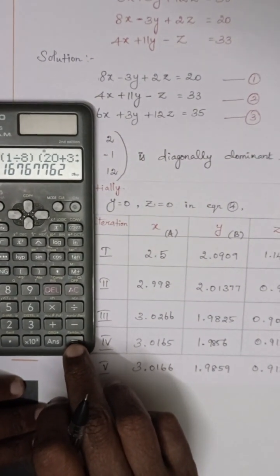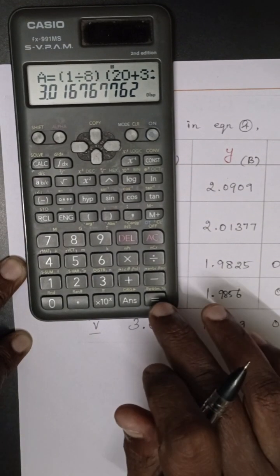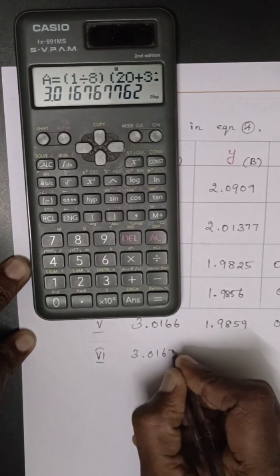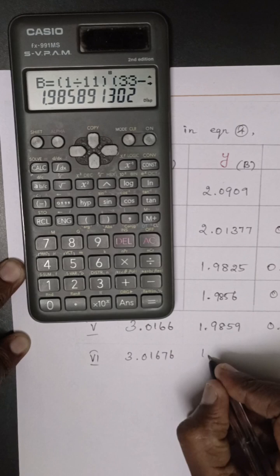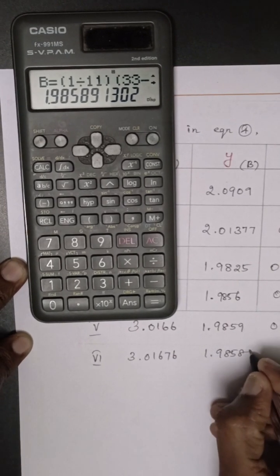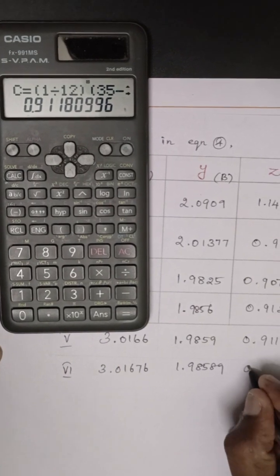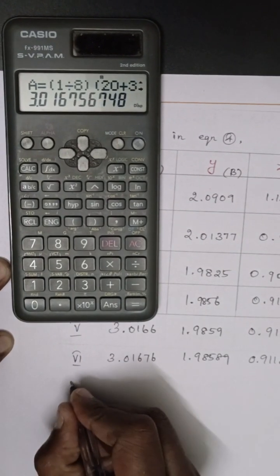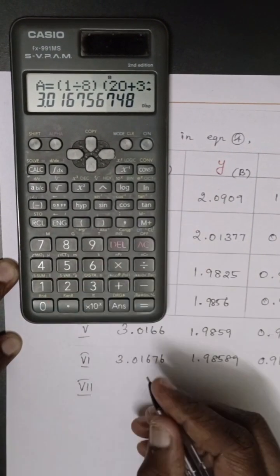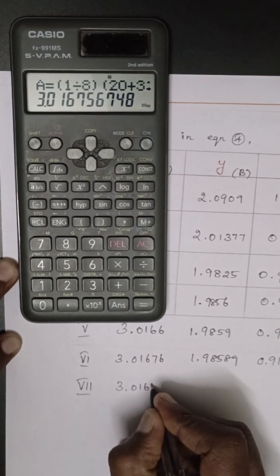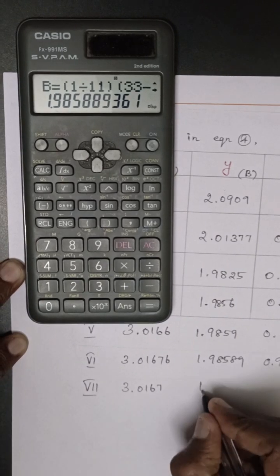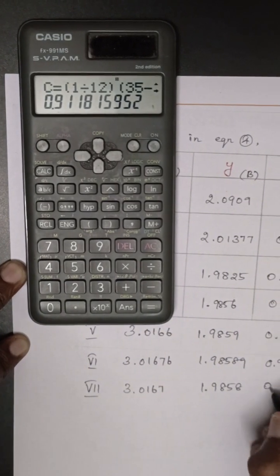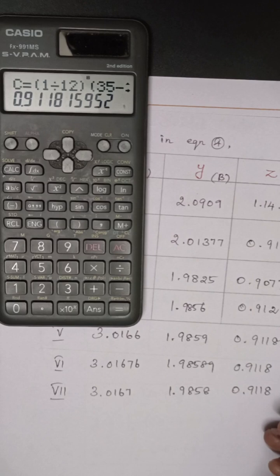This is sixth iteration value: 3.01676. Then b value is 1.98589, and c value is 0.9118. Next iteration: 3.0167, then here 1.9858, here 0.9118.